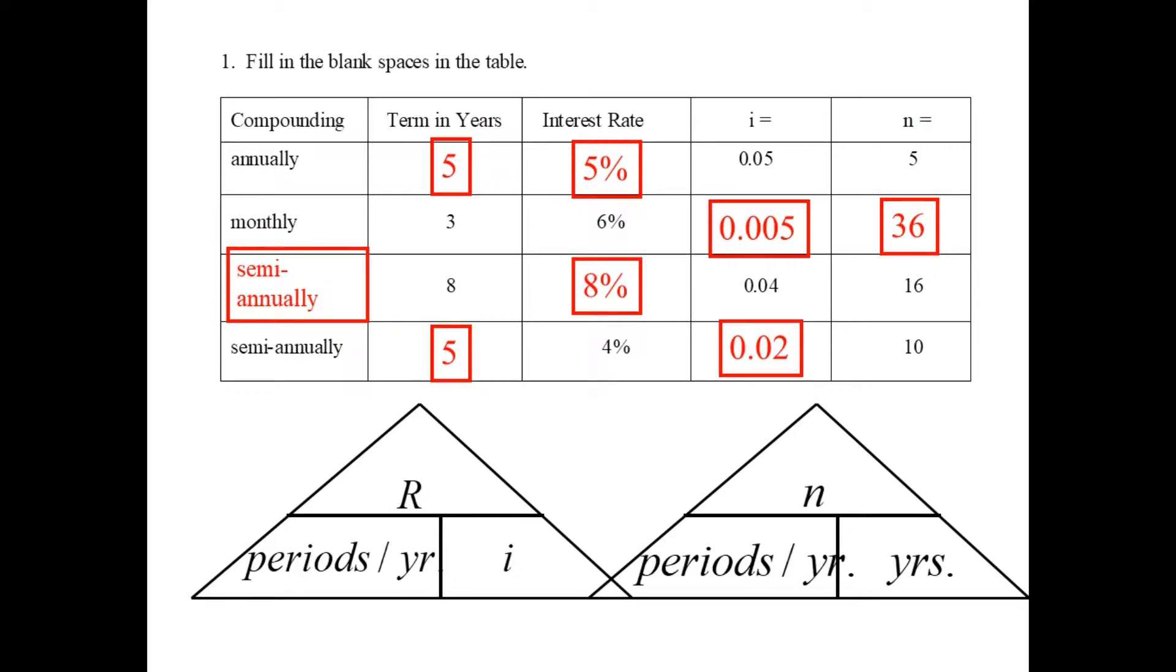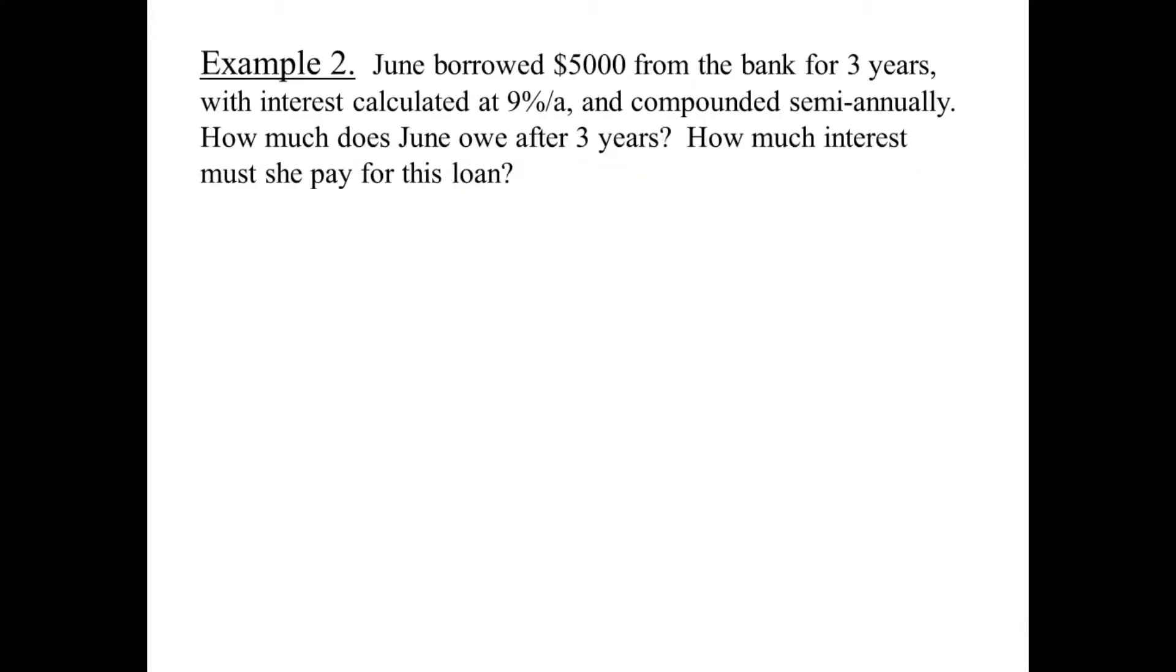Let's move to an example, a word problem. June borrowed 5 grand from the bank for 3 years with interest calculated at 9% per annum, which means 9% per year. Because annum is related to the word annually. And annually means once a year. So interest is calculated at 9% per year. That's the way it's always expressed, by the way. Compounded semi-annually. How much does June owe after 3 years? How much interest must she pay on this loan?